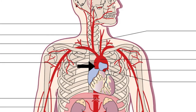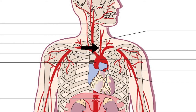The ascending aorta gives branches to the heart: the right and left coronary arteries. The outer convexity of the aortic arch gives three branches: the brachiocephalic, which is short and quickly divides into the right common carotid and right subclavian; the left common carotid; and the left subclavian.